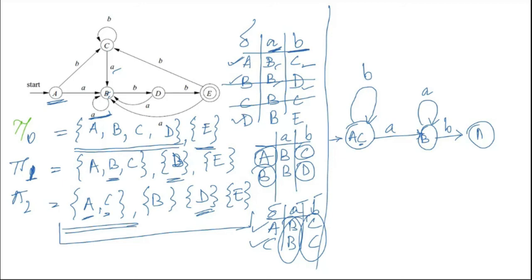On state D, if we give A, it was taking us to B — same thing here, for input A it goes to B. On state D, if we give input small b, it was taking us to E. We have an E state here, so for B we create that transition to E. Transitions for D are done.